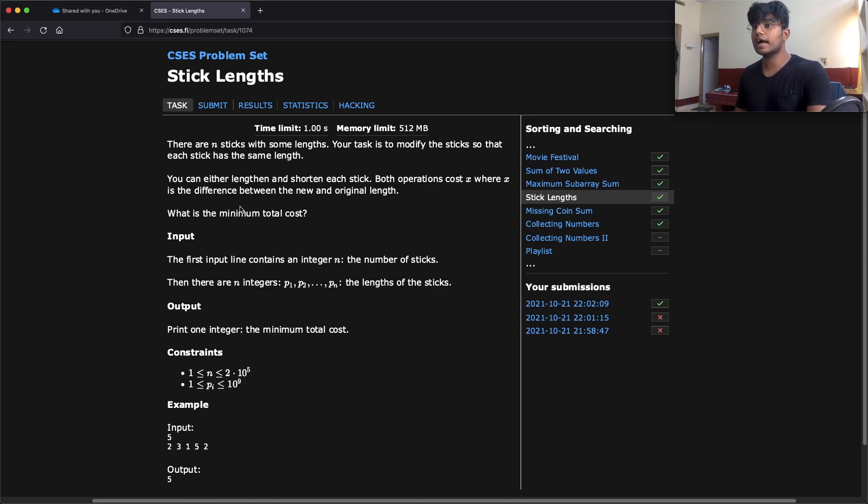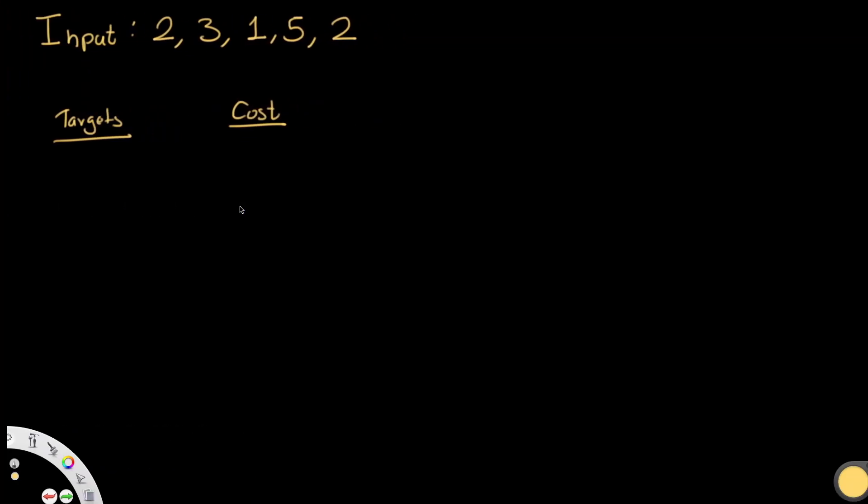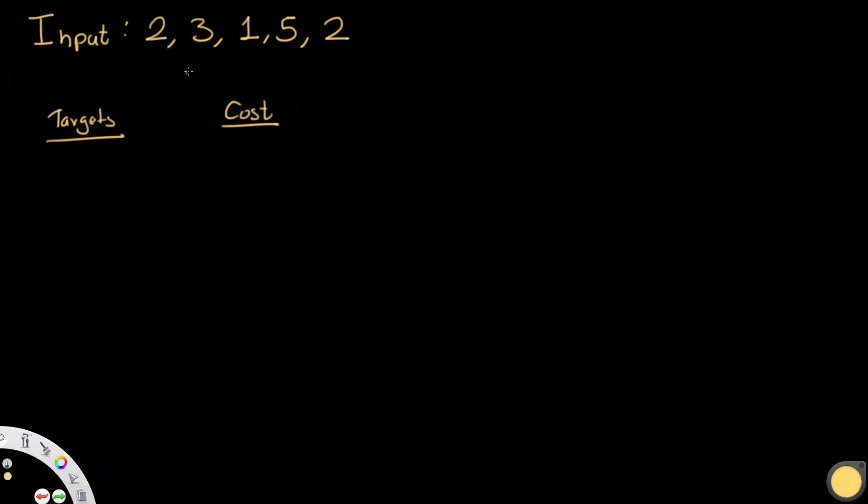Essentially we want to alter the stick lengths in this way so that they all have the same size at the ending and we want to find out what is the minimal cost or minimum total cost it requires to actually do so. Let's actually take a quick look at an example to better understand this. Let's say we have inputs of 2, 3, 1, 5, and 2. Let's say we want a target. This target is going to be that final number of length, the final length that all sticks are going to have.